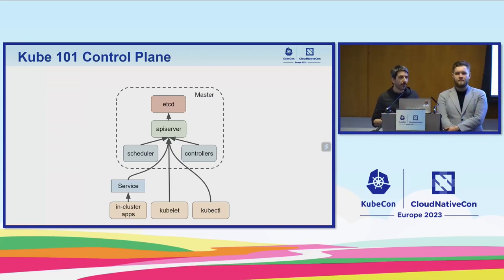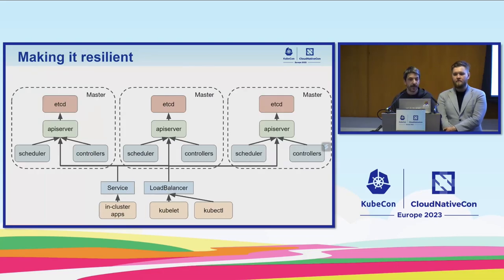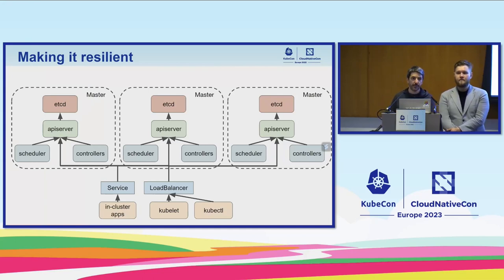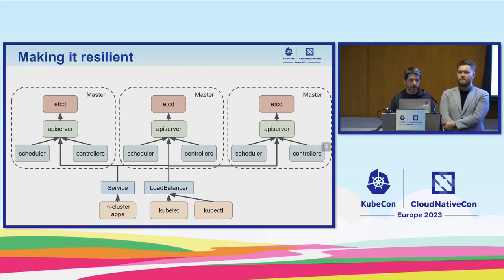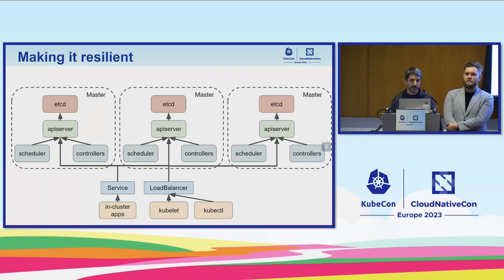This is not very resilient — if you lose the node running all these components, you lose your cluster. So the next step is usually to have multiple masters. Exactly the same setup, but instead of having a single master, we now have three masters running the same components. This is a bit misleading though, because all these components are stateless except for HCD, which is the data store of the cluster. So you have three HCD boxes, but it's actually an HCD cluster.